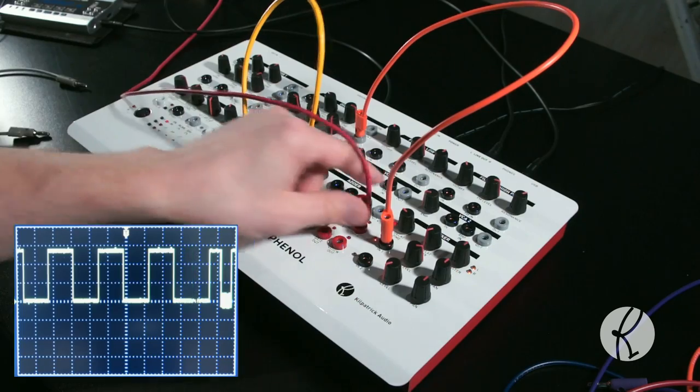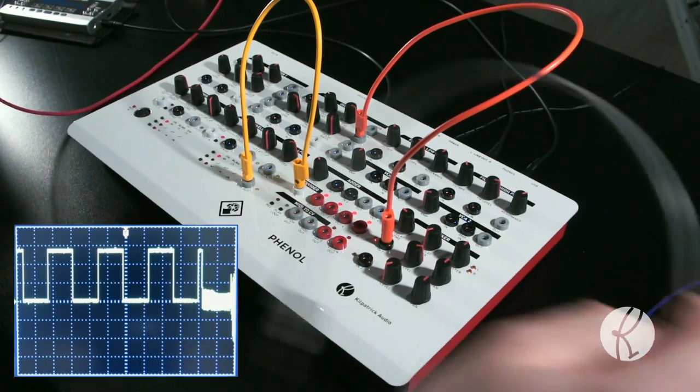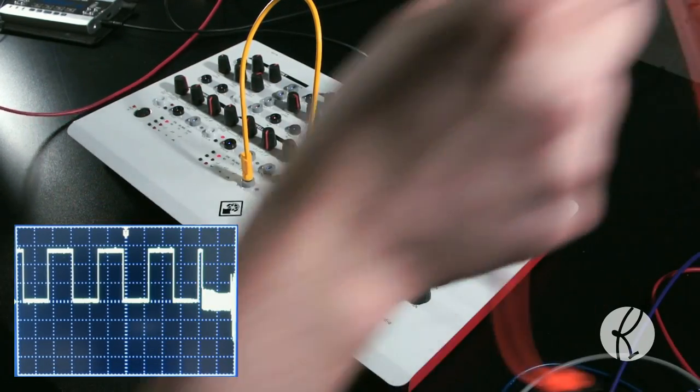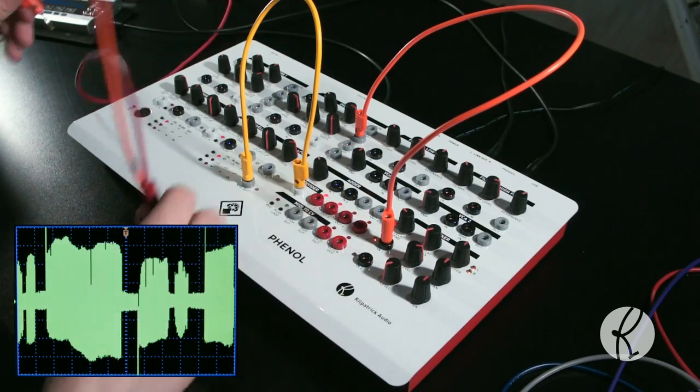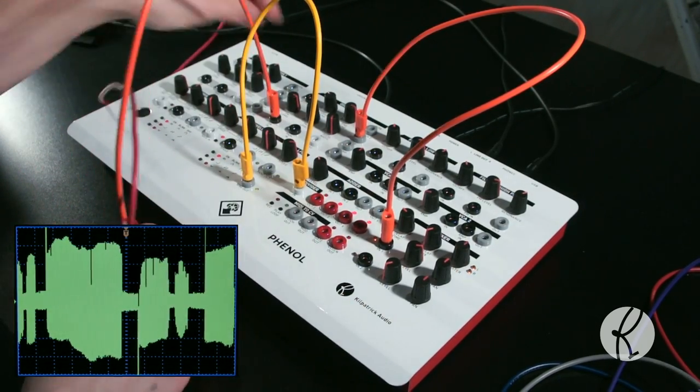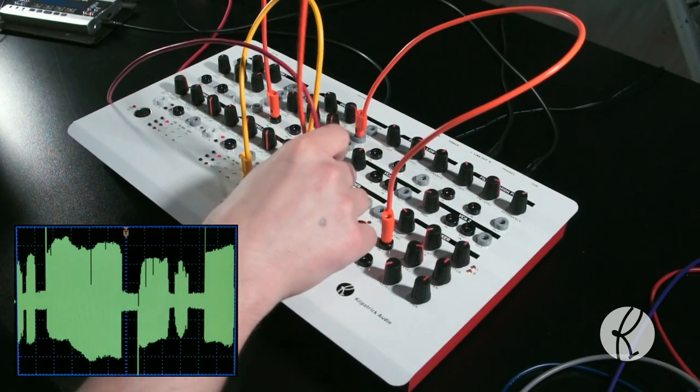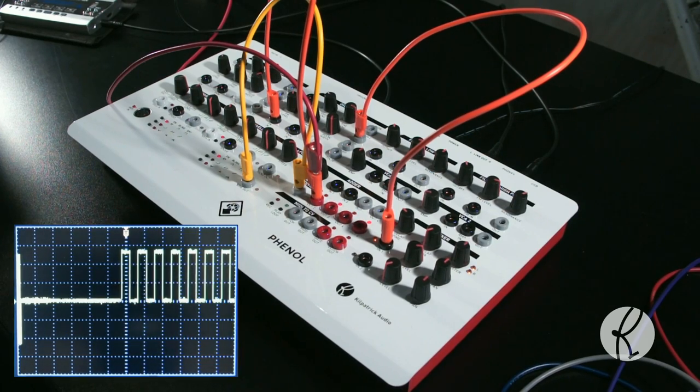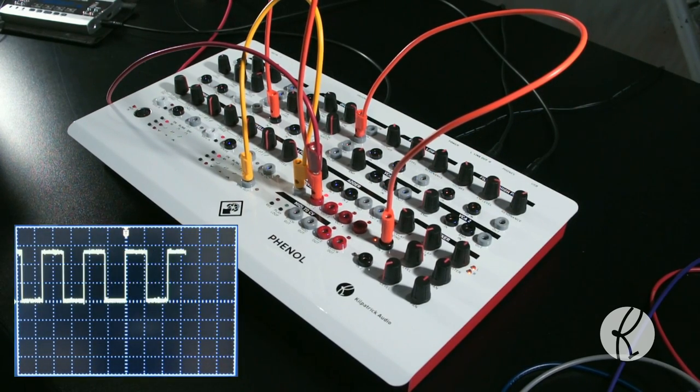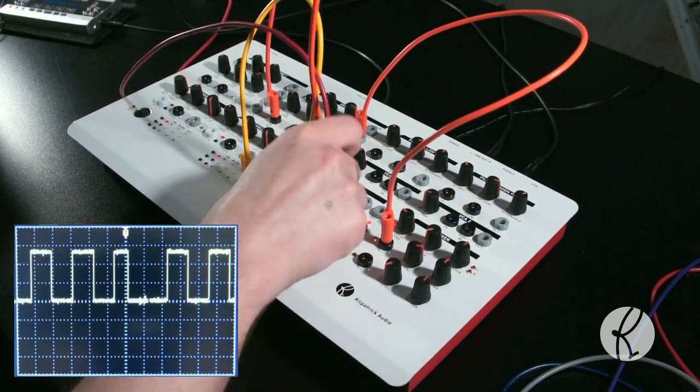Now let's listen to some of the things that you can do with the divider. Here we're feeding one of the outputs from the divider into the FM in on one of the oscillators. Because the output of the divider is digital, we get an on-off pulse. This creates a toggling between two frequencies.